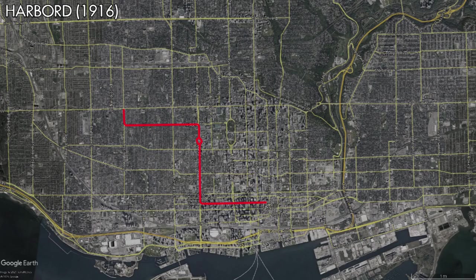On June 1st, 1916, the Harbord Streetcar would be rerouted at both ends of the line, with the east end now looping via Victoria, Richmond, and Church Streets instead of terminating at Church Street. The west end of the line would see the route extended north of Bloor Street along Ossington Avenue to Hallam Street, then traveling west along Hallam Street and Lappin Avenue to Lansdowne Avenue.